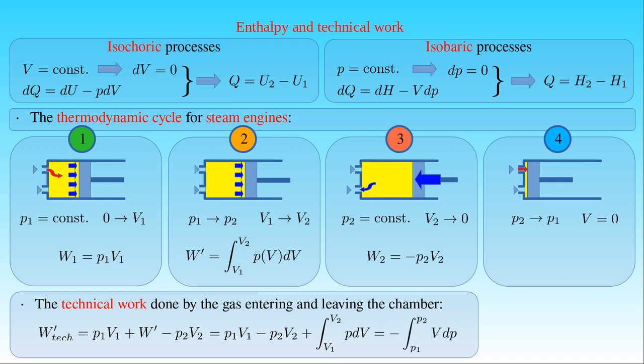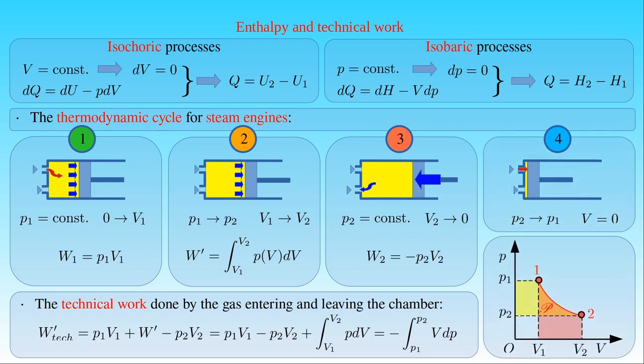In the four processes repeated in the cycle, the gas is the working substance while it enters and leaves the cylinder, changing its mass continuously. The work done by the steam engine is the technical work W'_tech, which is given by P1 times V1, plus W', minus P2 times V2. By applying partial integration, this expression reduces to minus the integral of the volume V with respect to the pressure P from P1 to P2. In the pressure-volume diagram of the cycle, the four processes are represented by sections connecting the points P1, 1, 2, and P2 respectively. We can see that the technical work is equal to the area of the plane figure with the corner points P1, P2, 2, and 1. In the process represented by the path between the points 1 and 2, the mass of the gas is constant and it absorbs the heat Q, increasing its enthalpy by H2 minus H1.